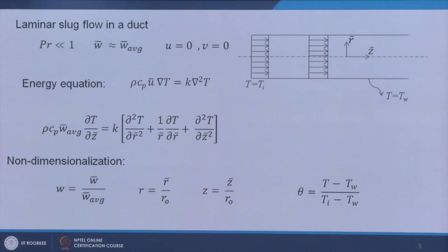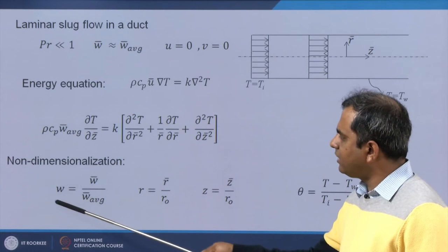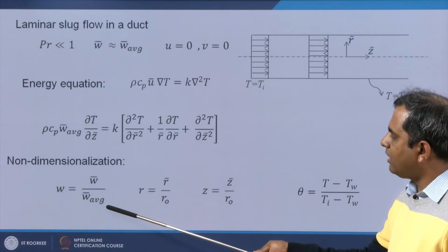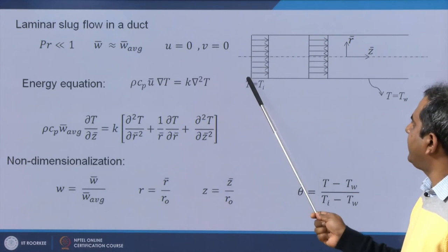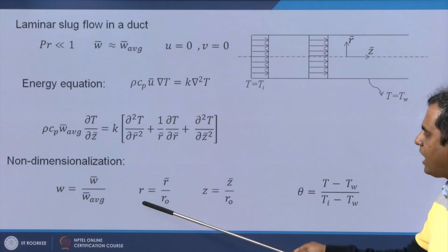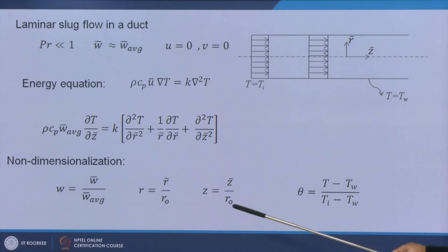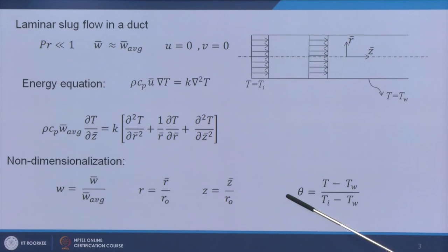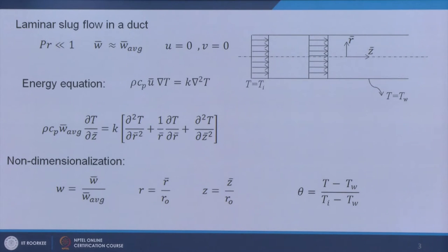We now non-dimensionalize the equation. The non-dimensionalized velocity W equals W-bar divided by W_average. The radial coordinate R equals R-bar divided by R_naught (tube radius). The axial coordinate Z is also non-dimensionalized by R_naught. For temperature, theta equals (T − T_W) / (T_i − T_W), where T_i is the incoming fluid temperature and T_W is the wall temperature.